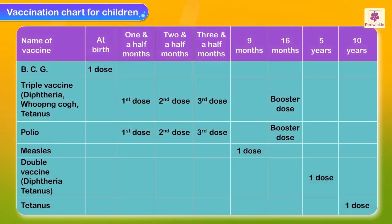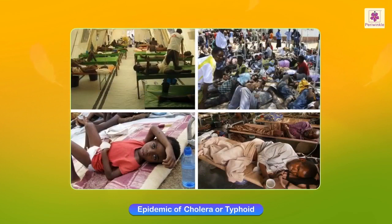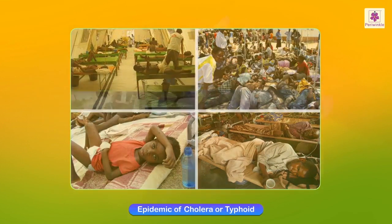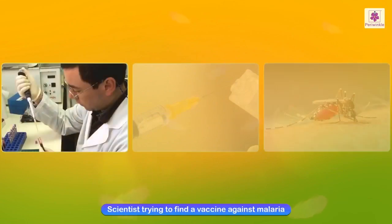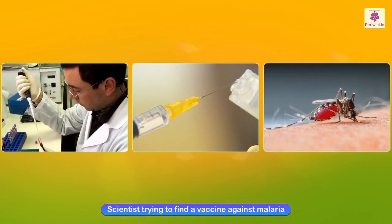This is the vaccination chart showing the different vaccines given to children. When there is an outbreak of cholera or typhoid, health workers from the public health department set up health camps to immunize people — that is, give vaccines to prevent the disease. Scientists are currently trying to find a vaccine against malaria.